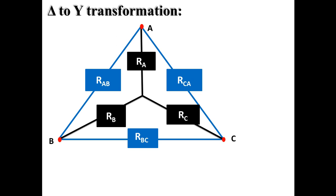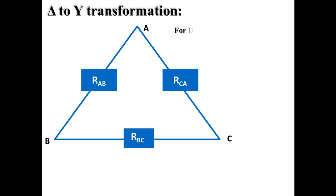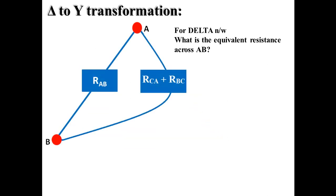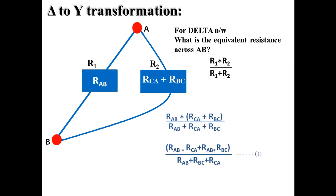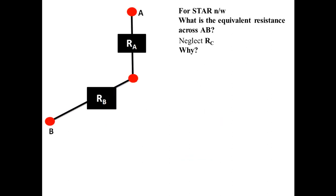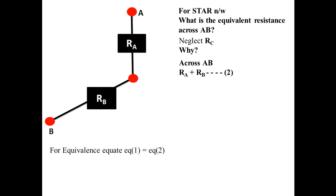We will cover delta-to-star followed by star-to-delta transformation. For the known delta network, we derive equations for RA, RB, RC with respect to delta elements RAB, RBC, and RCA. For the delta network, the equivalent resistance across AB: we can neglect point C, so RCA and RBC appear in series, and these two branches are in parallel — shown in equation 1. Similarly, for the star network across AB, traveling from A to B we go through RA and RB, neglecting RC, so the equivalent resistance is RA + RB. Equating these gives equation A.